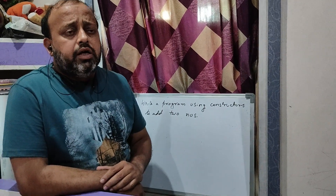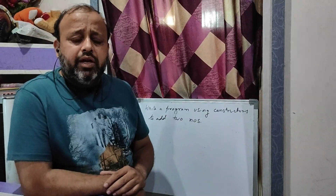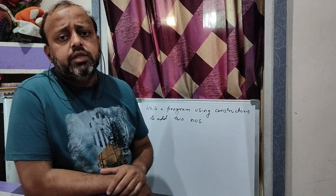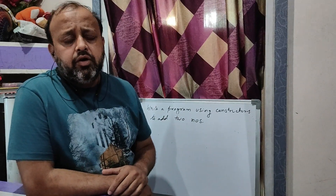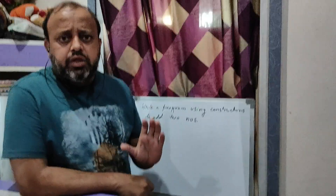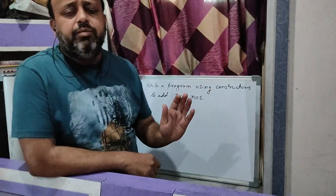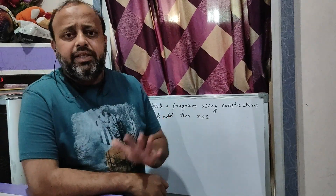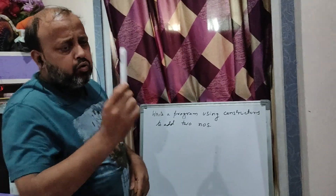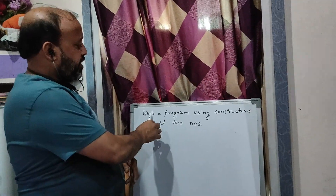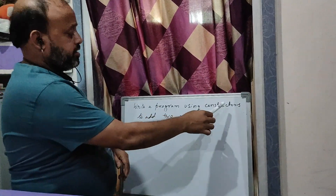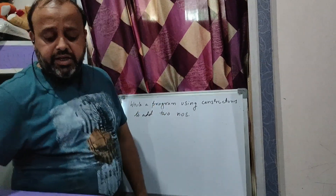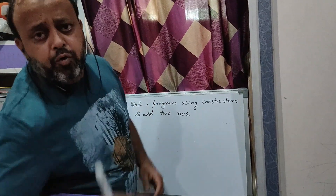In that question, what happens is we have to strictly follow the question. Whatever is given in the question regarding variables and methods, we have to abide by that. So what I will do now is write a program using constructors to add two numbers — a very basic and simple program.